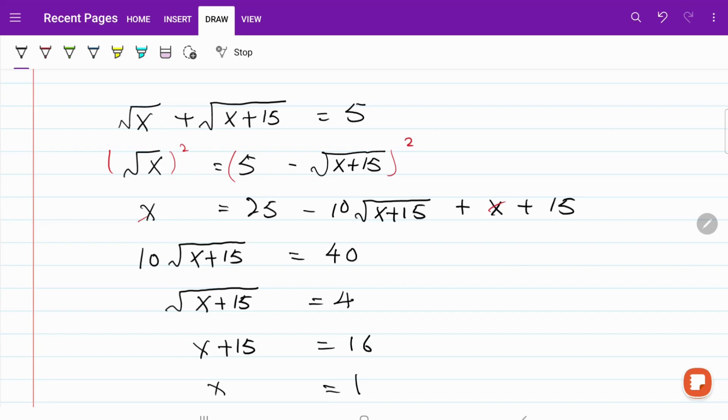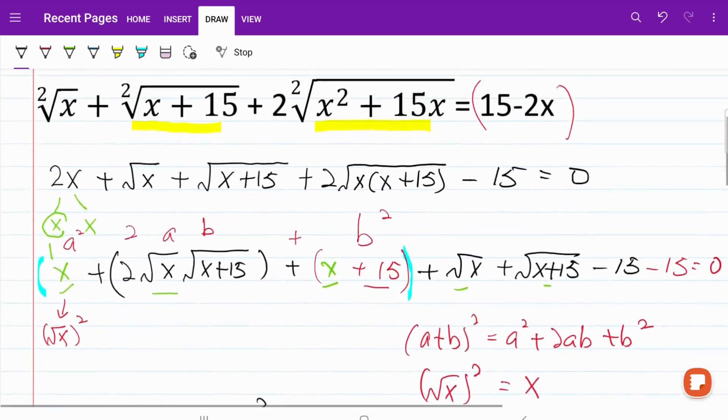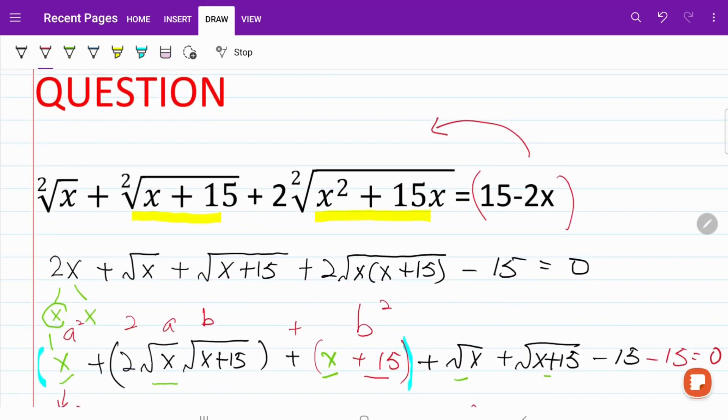We will try to substitute this value of x into our original equation to check for the answer. So what I have now is square root of 1 plus the square root of 16 plus 2 multiplied by the square root of 16 is equal to 15 minus 2. This part right here will become 13 and this part right here will become 13. Implying that x equal to 1 is the correct answer.